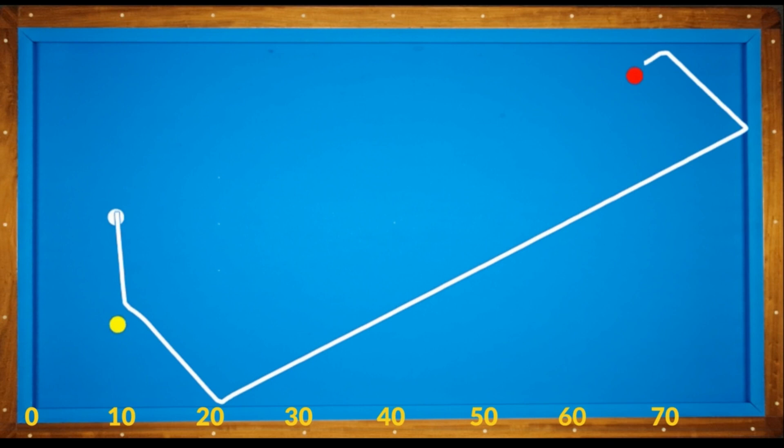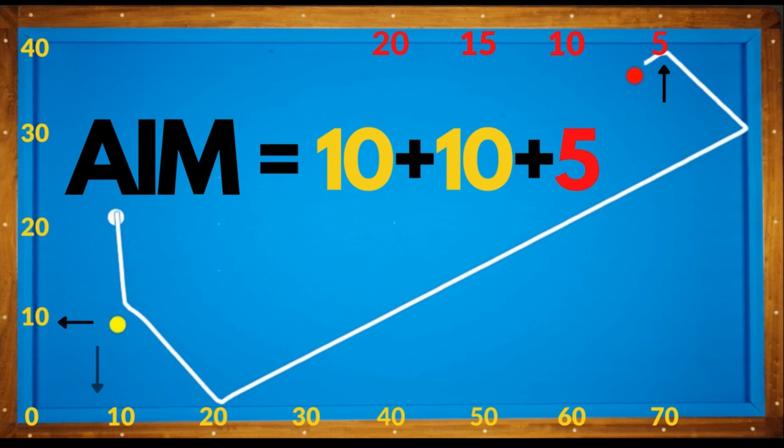Purpose of the corner system is to find the aiming point. We give 10 points to each diamond of the long and short cushions. For the red ball location, we give 5 points to each diamond of long cushion.